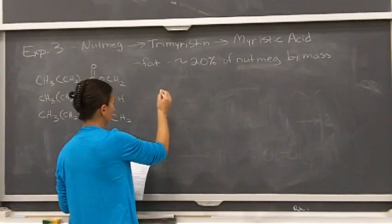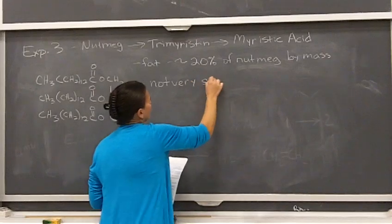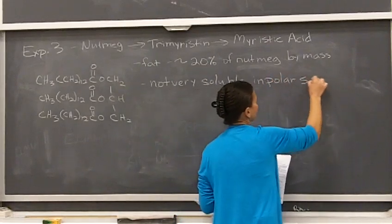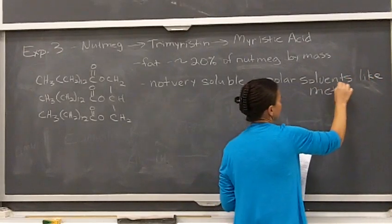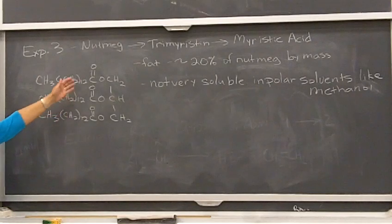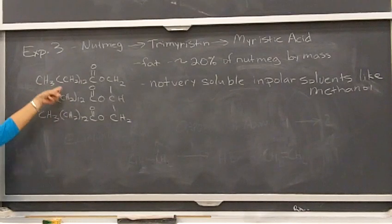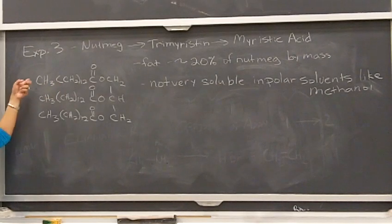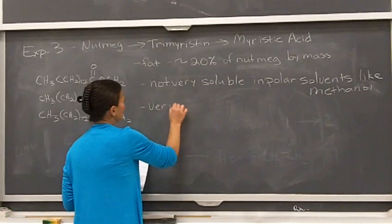It's not very soluble in things that are really polar. Things like methanol — we'll get back to methanol here in a little bit — it does not dissolve well in that, because even though we've got these ester groups here, it has all these methyls and methylenes, so lots of carbon and hydrogen. We've got 12 repeating methylenes before we get to the terminal methyl group on each of these chains, so it is not very soluble in things that are polar.